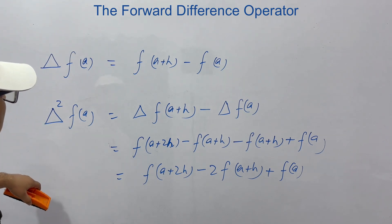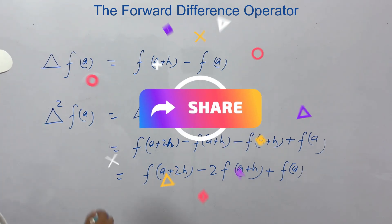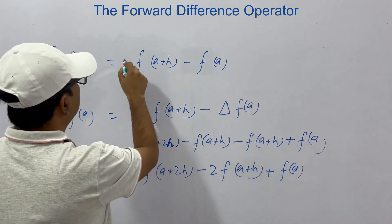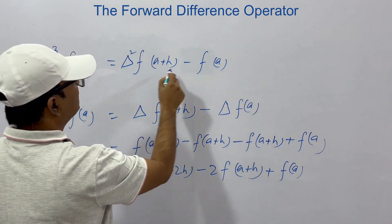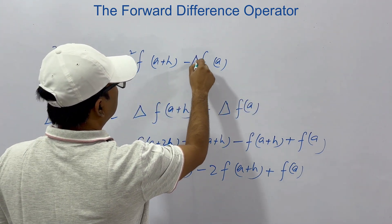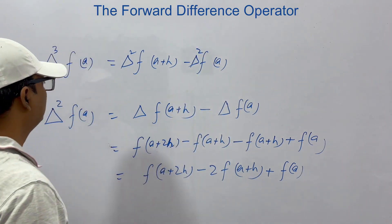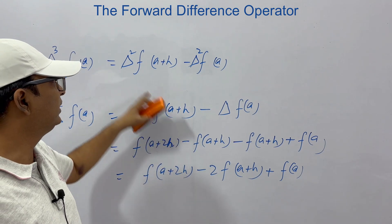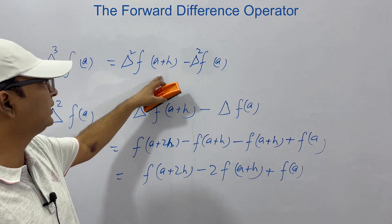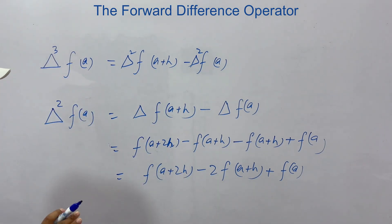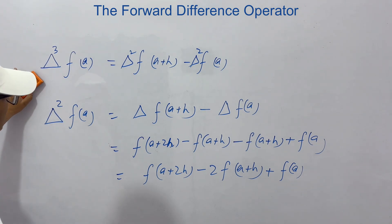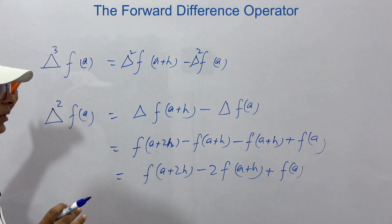Similarly, we can go for del³ f(a) — the third degree operator. This will be del² of f(a+h) minus del² of f(a). You can take the value like del² f(a) is this expression, and similarly find the value for the others. You don't have to memorize this — you have to understand how the operator works. This is essentially a revision of concepts already covered.